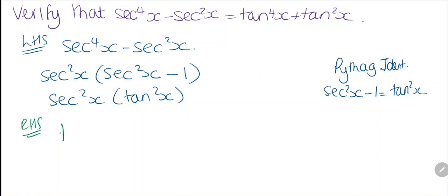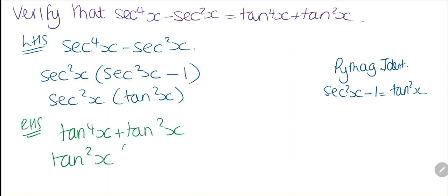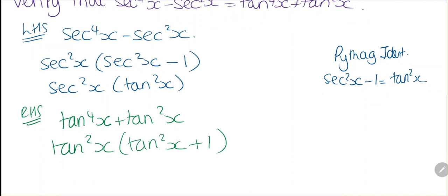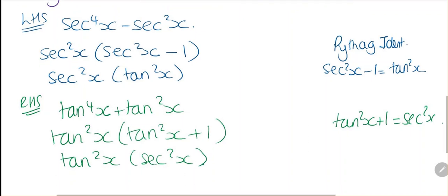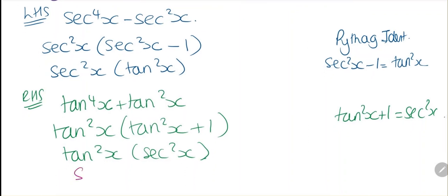On the right hand side we have tan⁴x plus tan²x, and we can factor out tan²x, which leaves tan²x plus one. We know that tan²x plus one is equal to secant²x, so we can rewrite this as tan²x multiplied by secant²x, which is the same as secant²x multiplied by tan²x.